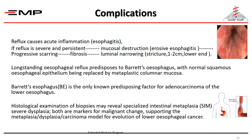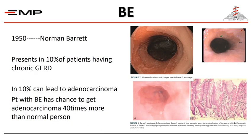Another important complication from long-standing reflux is Barrett's esophagus. Here there is metaplasia — a change of the squamous epithelium of the normal esophagus to columnar epithelium resembling the gastric mucosa. Barrett's esophagus is the only known predisposing factor to adenocarcinoma of the lower esophagus. It was discovered by Norman Barrett in 1950. It is present in 10 percent of patients with chronic reflux, and in 10 percent of those with Barrett's it can lead to adenocarcinoma — 40 times more common than in a normal person.